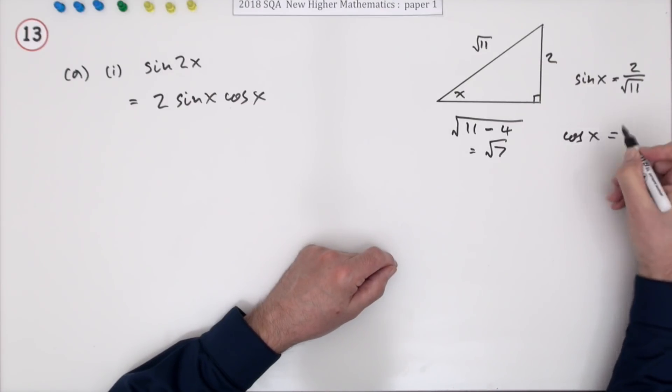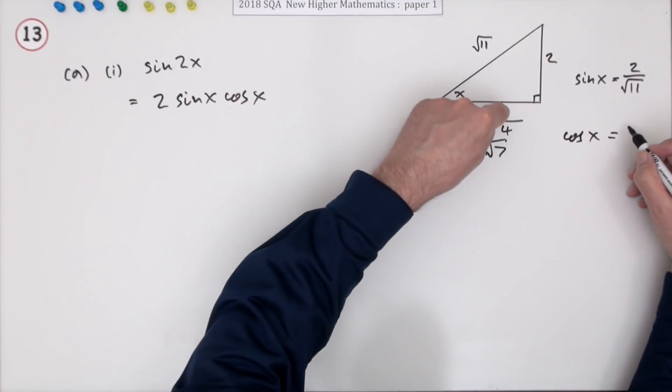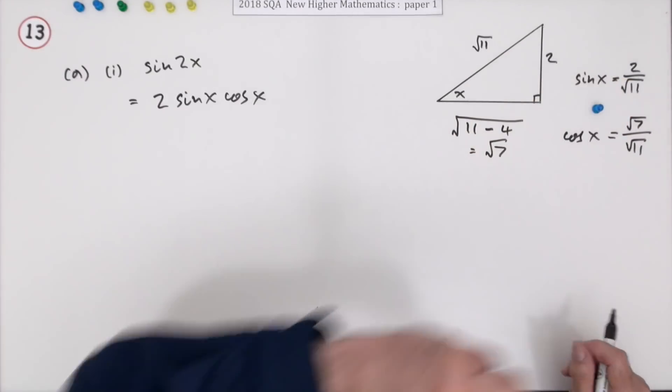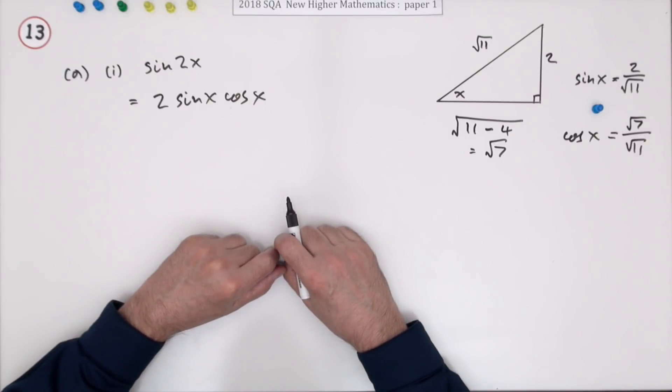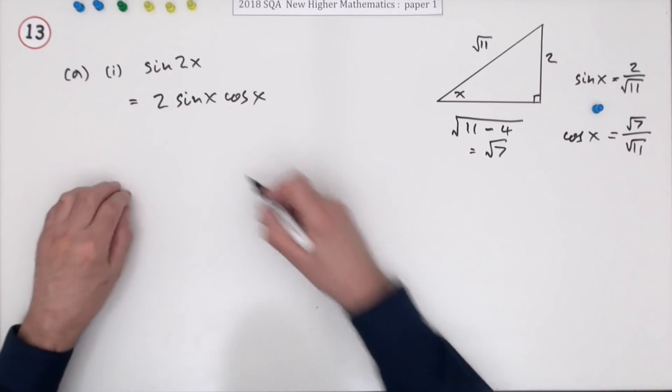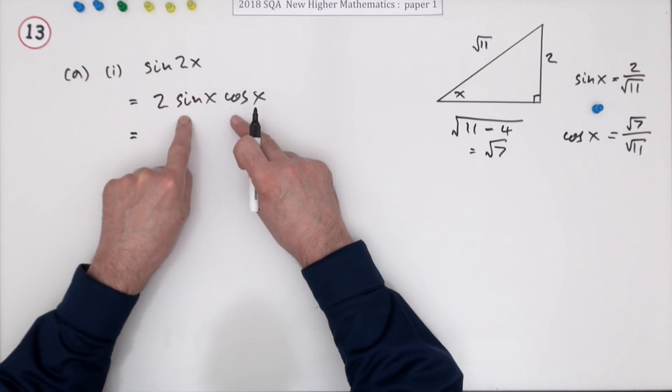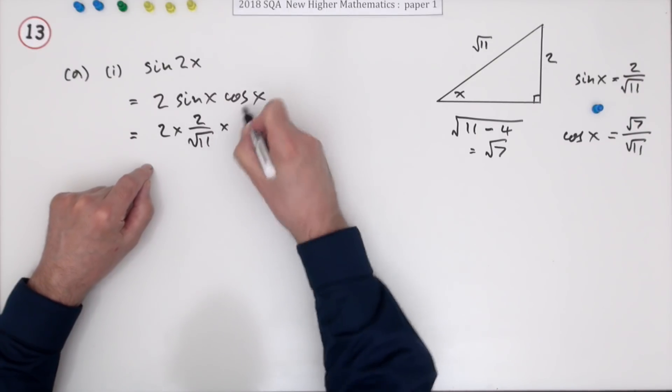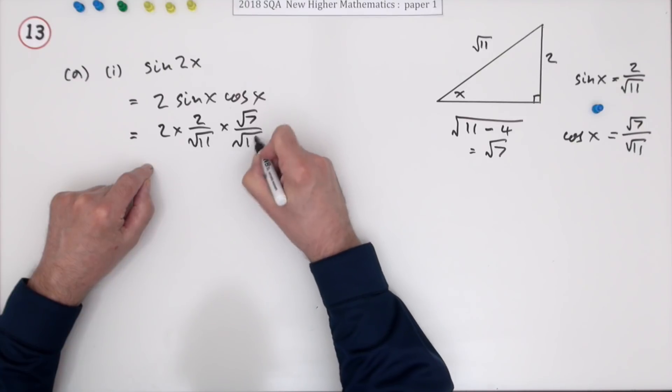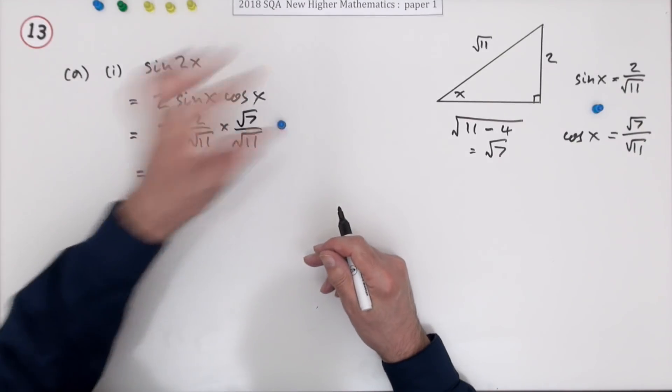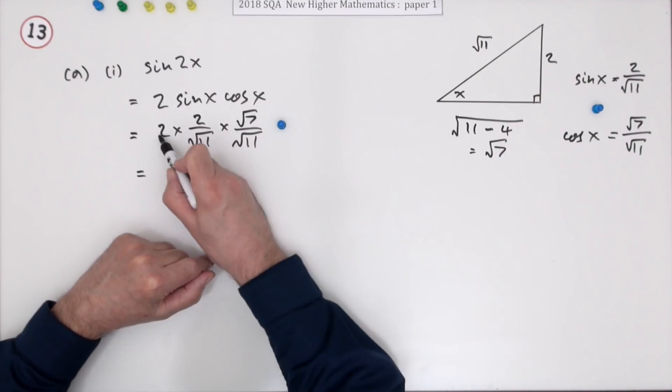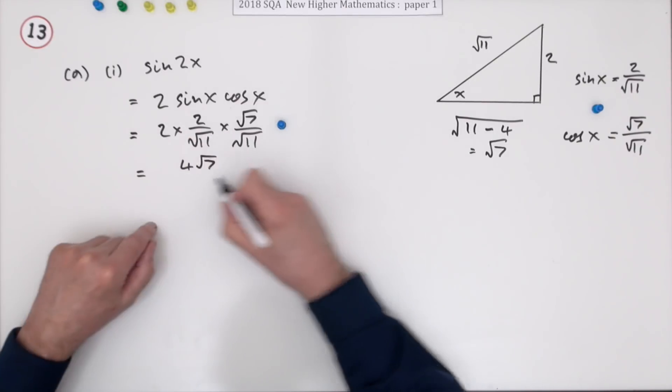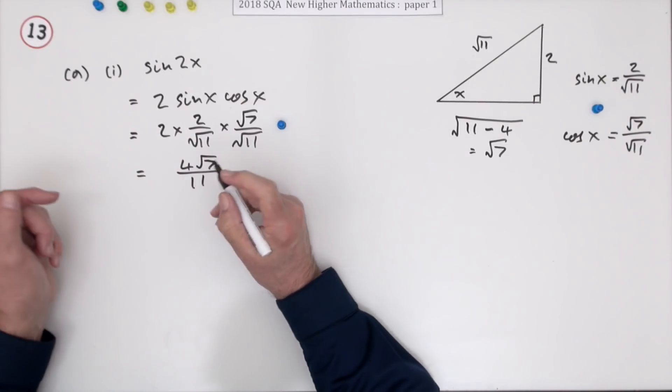You don't get a mark until you say the other bit of information I need is the cosine is the adjacent side, which is root 7 over root 11. Now you get a mark for dealing with the triangle. But you immediately get another mark for just popping them into this formula which you found at the front. Sine x was 2 over root 11, cos x was root 7 over root 11. That's a mark. You just multiply out: 2 times 2 is 4 times root 7 is 4 root 7. Root 11 times root 11 goes back to 11, and that's it.